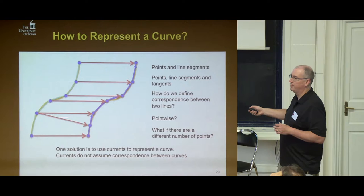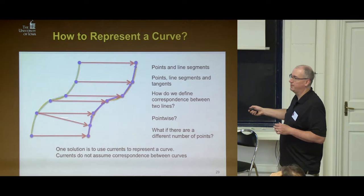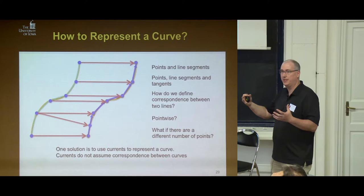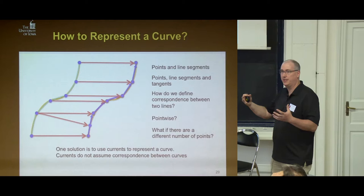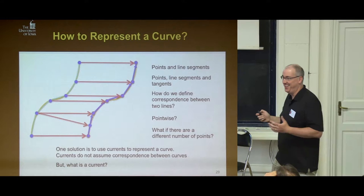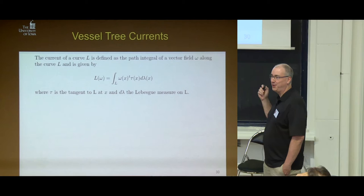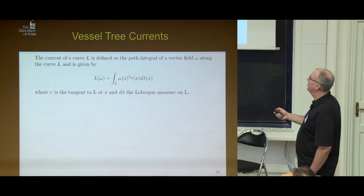The beautiful thing is I can have a different number of landmarks in one curve versus the other and it doesn't affect anything. For surfaces this gets even more complex. Another cool thing about currents is you can actually combine multiple lines into a single line current. What the heck is a current? A current of a curve L is defined as the path integral of the vector field omega along the curve L, given by the integral of omega evaluated at x dotted with the tangent T, where T is the tangent to the line at the point x, and d-lambda is the Lebesgue measure on the curve.